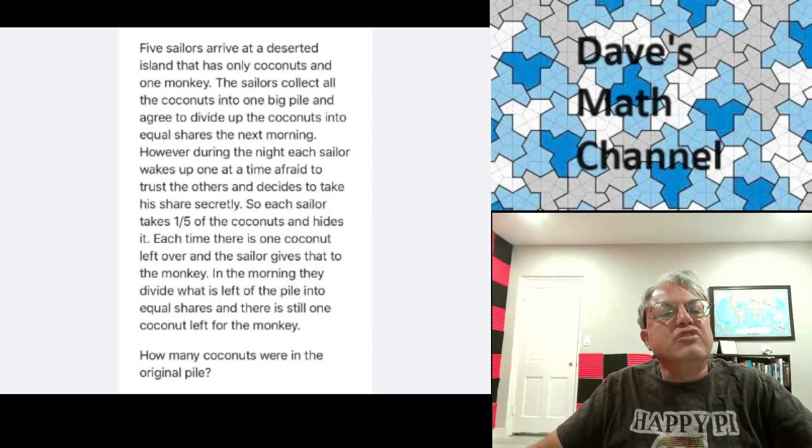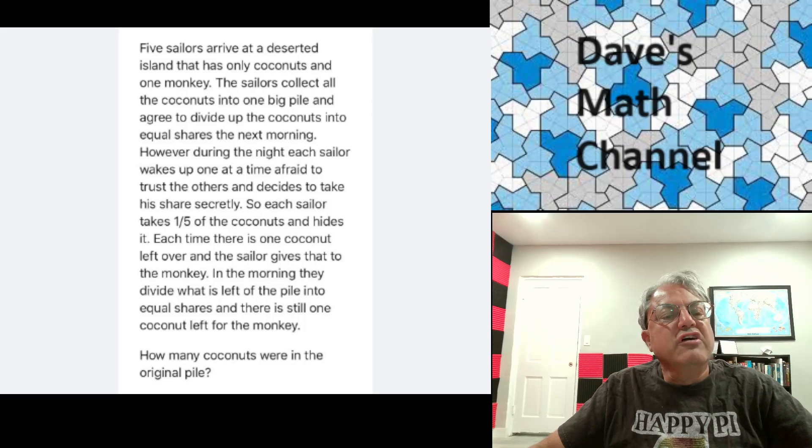So you have five sailors that arrived at a desert island that has only coconuts and one monkey. Sailors collect all the coconuts into one big pile and agree to divide up the coconuts into equal shares the next morning. However, during the night each sailor wakes up one at a time, afraid to trust the others, and decides to take his share secretly.